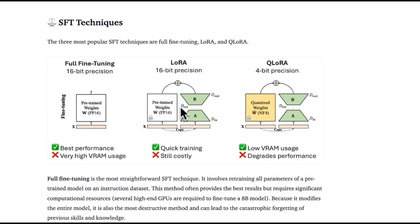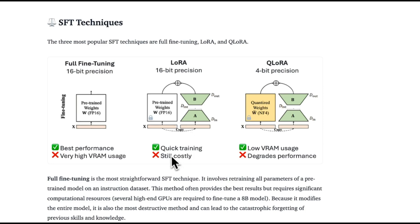The second option is to not update the weights directly, but add external adapters to it, where you can control the number of parameters in these external adapters. This approach is called LoRA, and usually you do the weight updates for these external adapters in 16-bit precision, and later on merge those adapters to the original model weights. This will give you quick training, but will still be costly because you are doing all the operations in 16-bits.